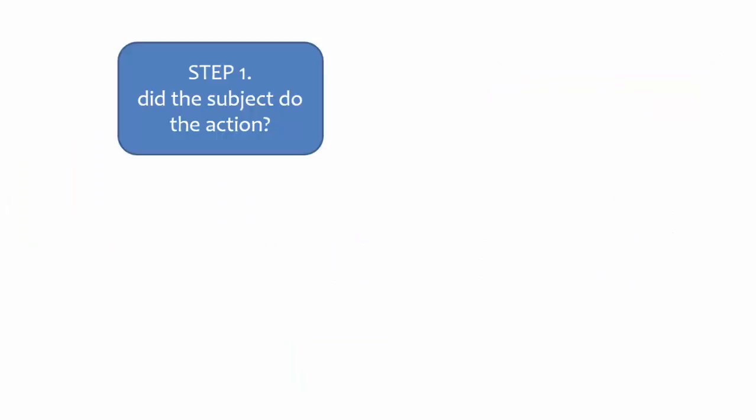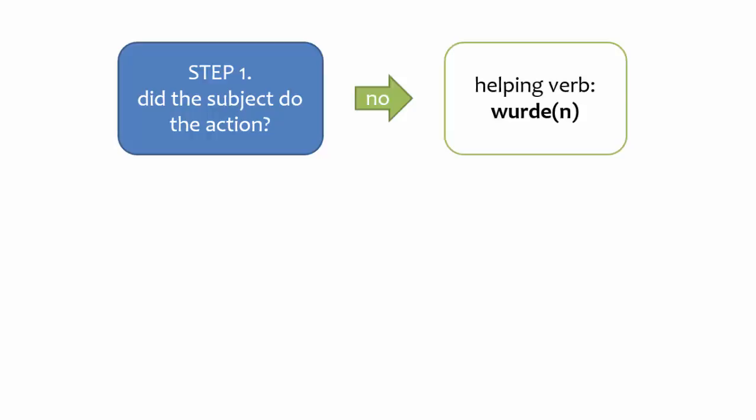Now that we've defined helping verbs, let's look at how to choose the correct one. The first step is to decide whether the subject did the action, or had the action done to it. If the subject did not do the action, but rather had the action done to it, the proper helping verb is a past tense form of werden. Most of the time you'll choose würde for singular subjects and würden for plural subjects.